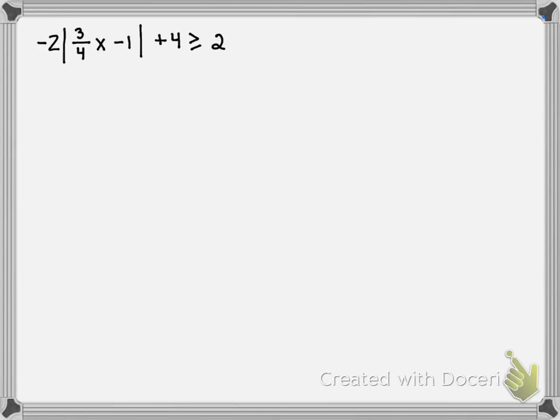So I'm going to try to isolate everything that's in the absolute value. So the first thing I would do, like any equation, I would subtract 4. And after I do so, we've got what we result here.